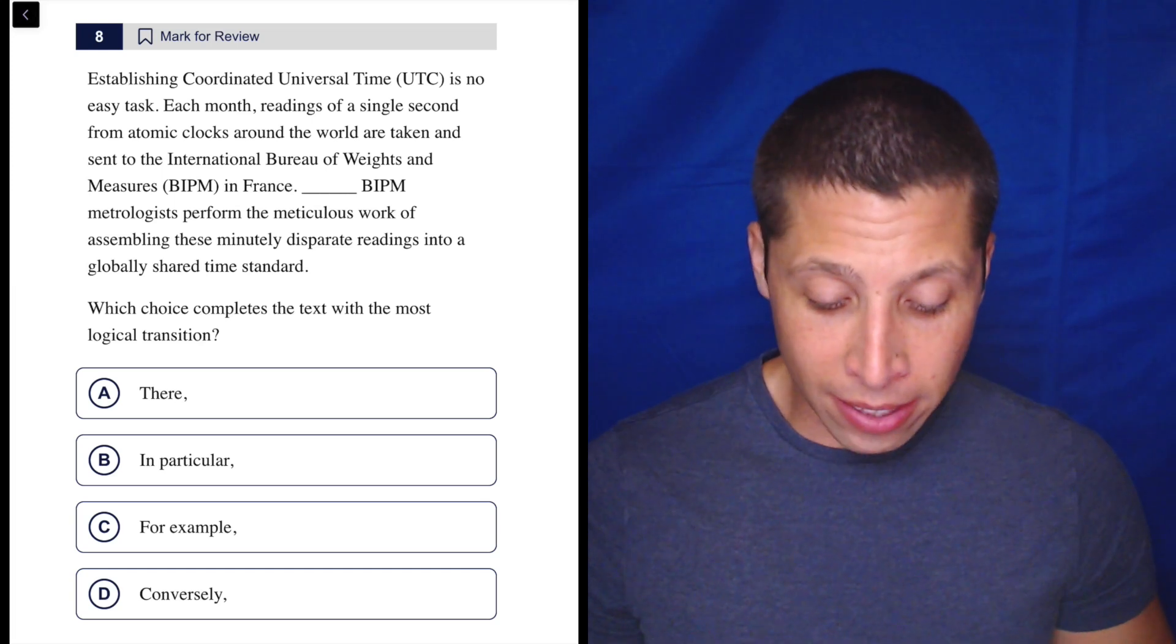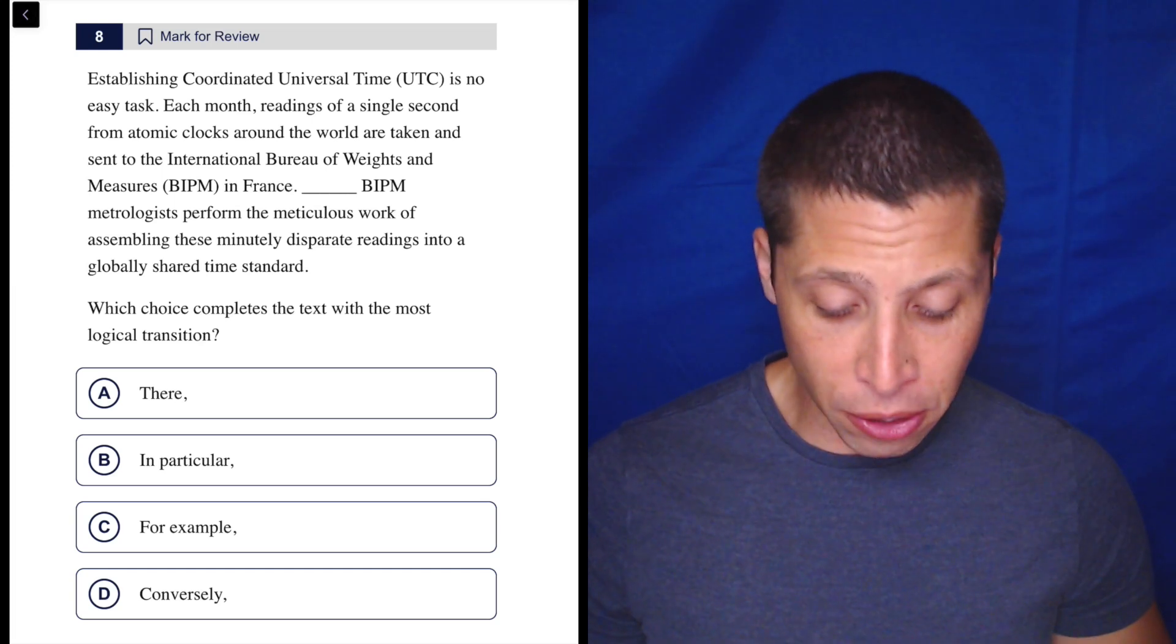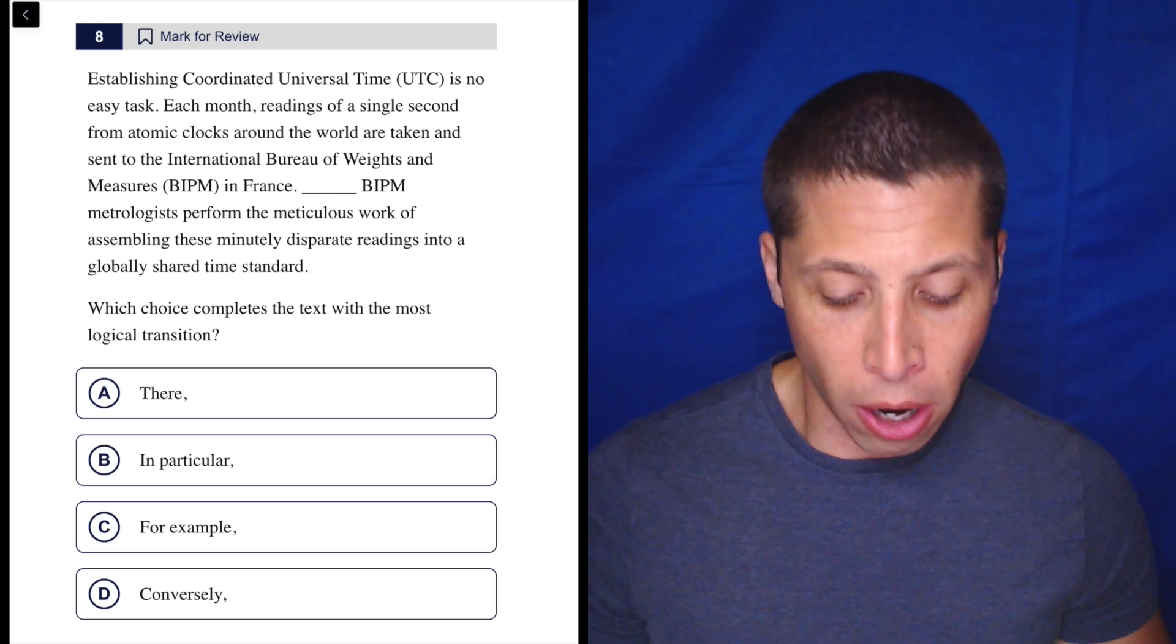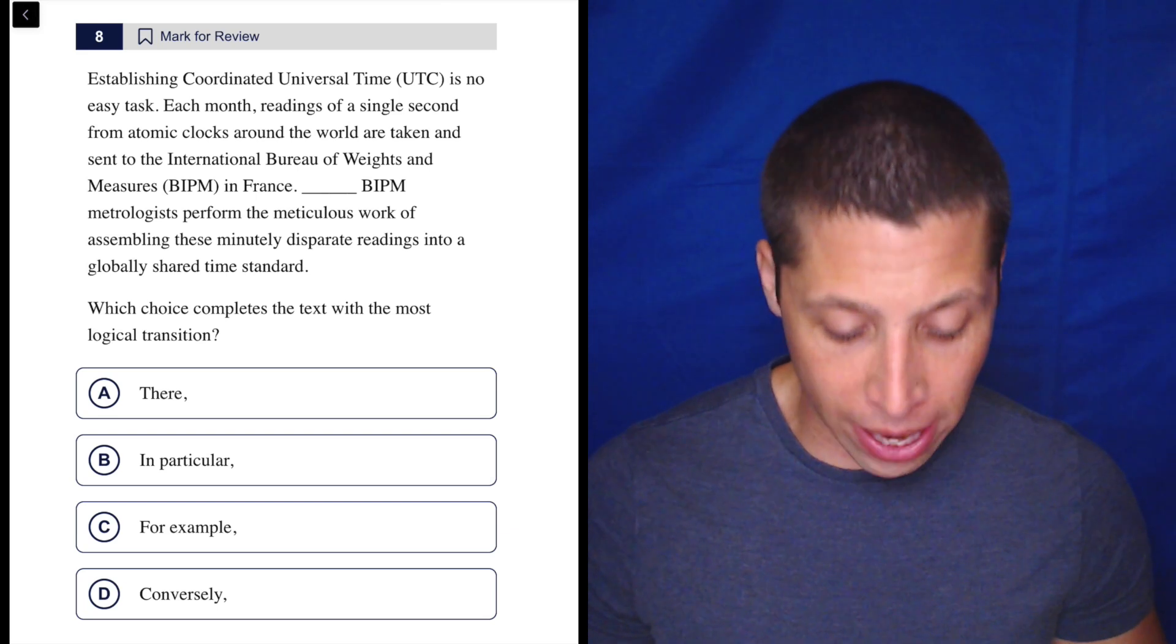Let's dive right into the sentences. Establishing coordinated universal time is no easy task. Each month, readings of a single second from atomic clocks around the world are taken and sent to the International Bureau of Weights and Measures in France.